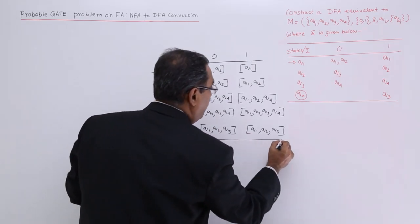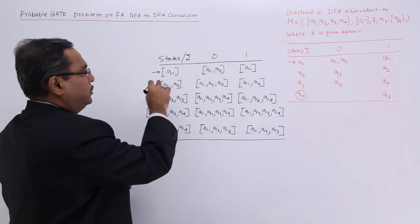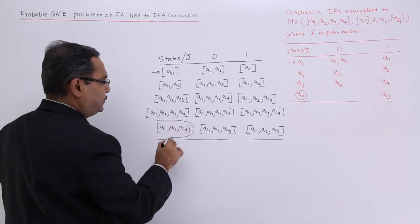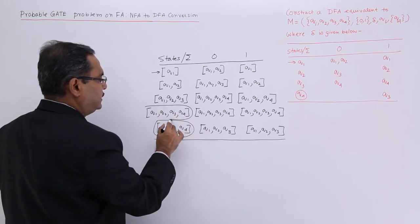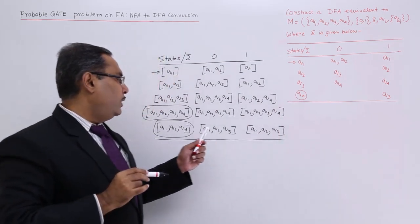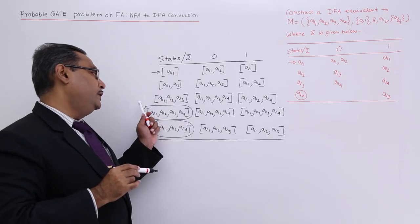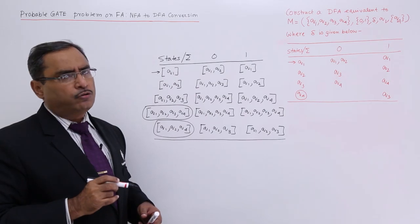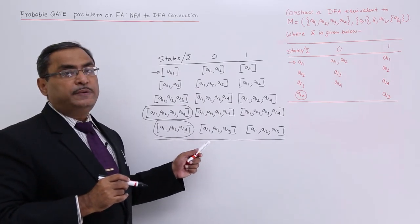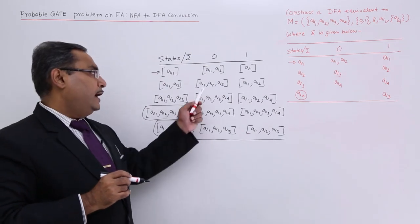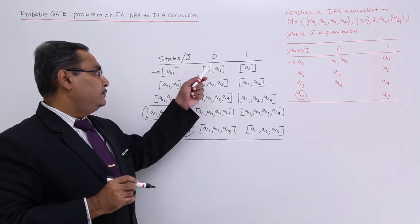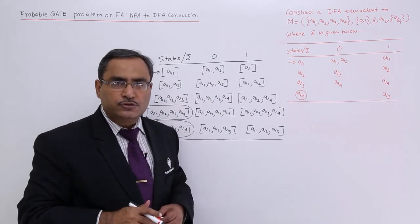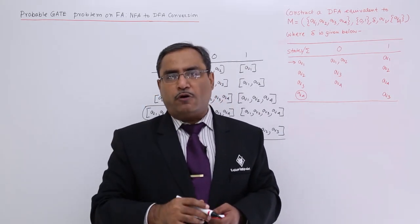Now q1 is the initial state, so q1 will be the initial state in the DFA as well. q4 is the final state in the NFA, so wherever q4 has participated — that state will be the final state in the DFA. So {q1, q2, q3, q4}, {q1, q2, q4}, and {q1, q2, q3, q4} are final states. You can easily draw the respective transition diagram from this transition table of the DFA. These are the states, inputs, and the initial and final states. In this way the problem can be solved.